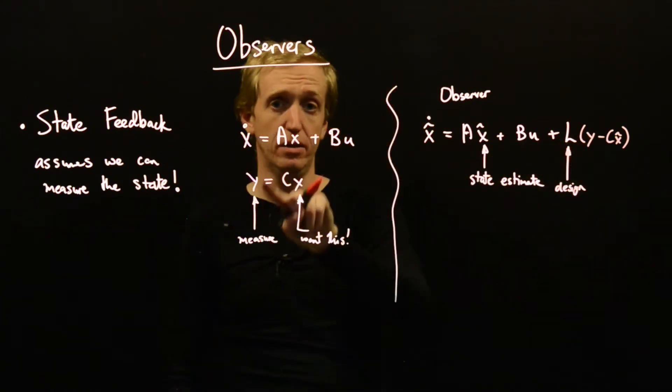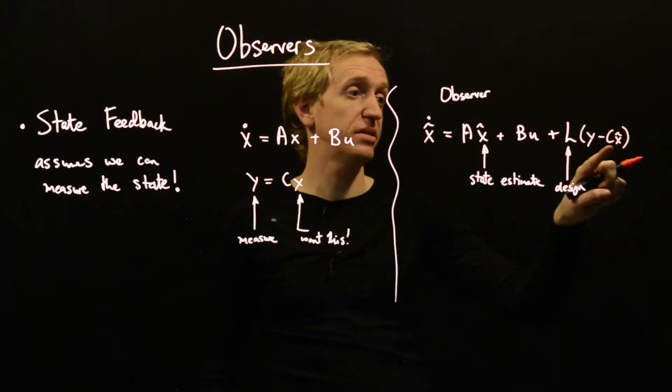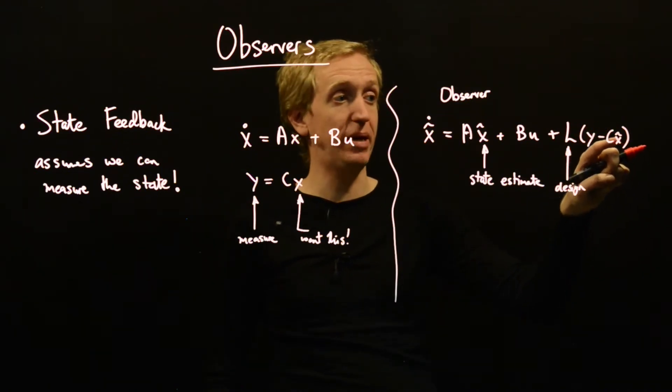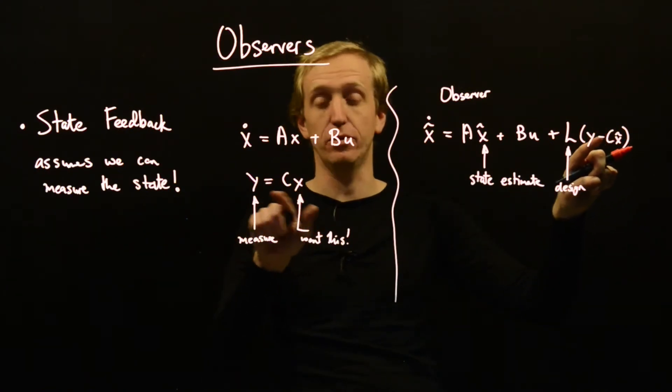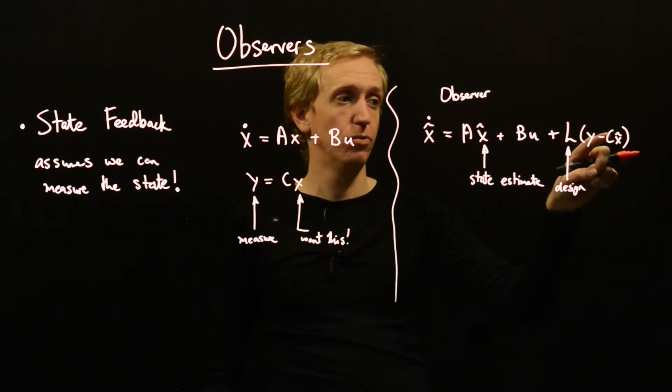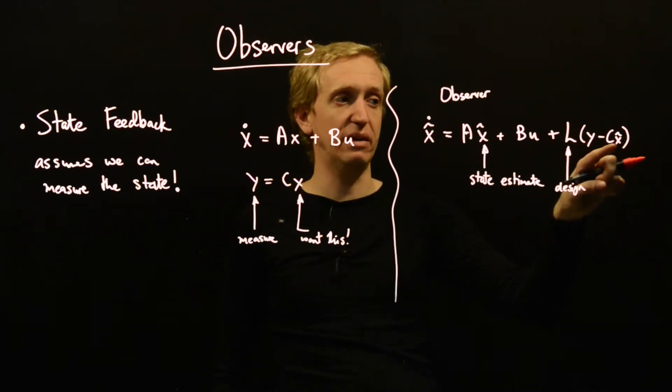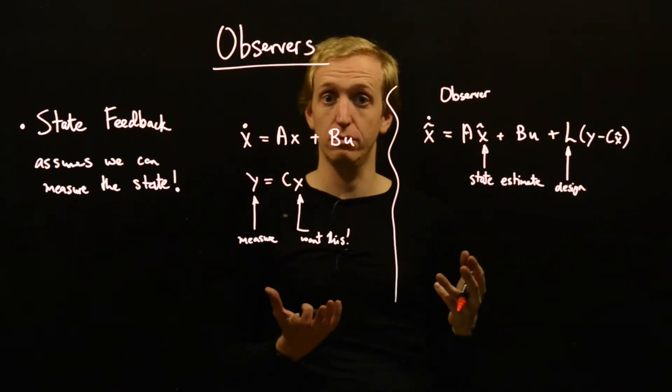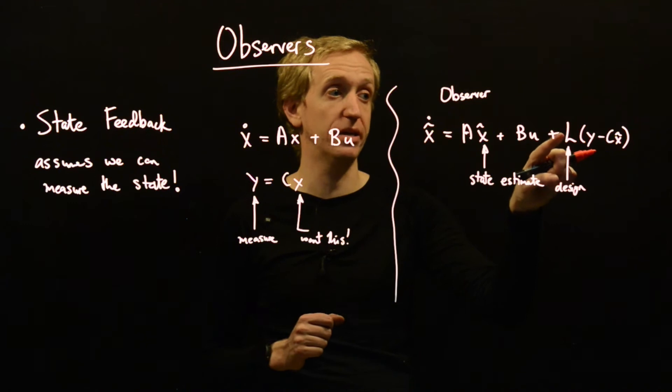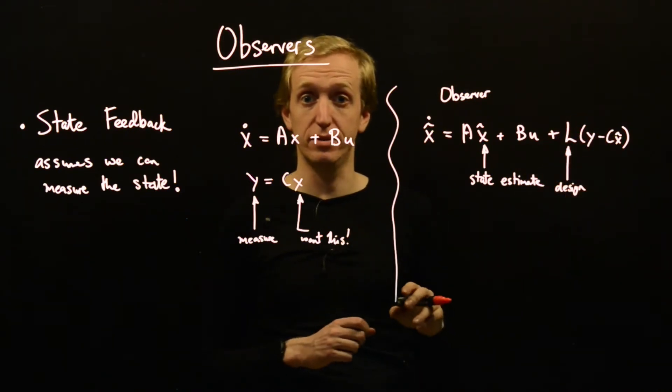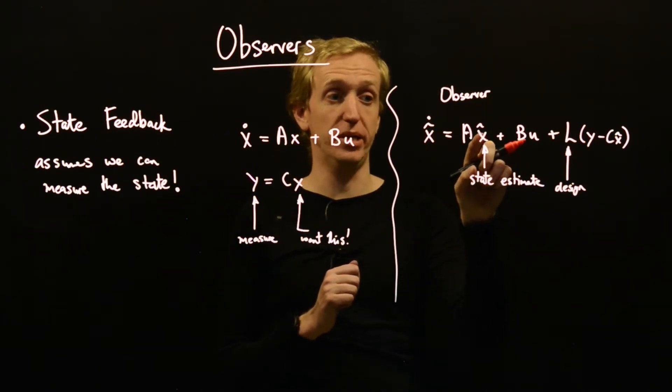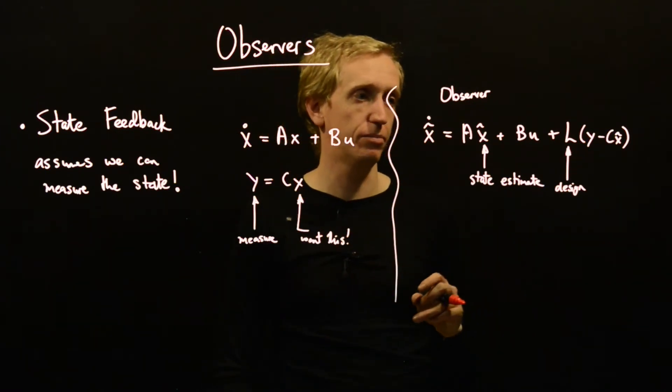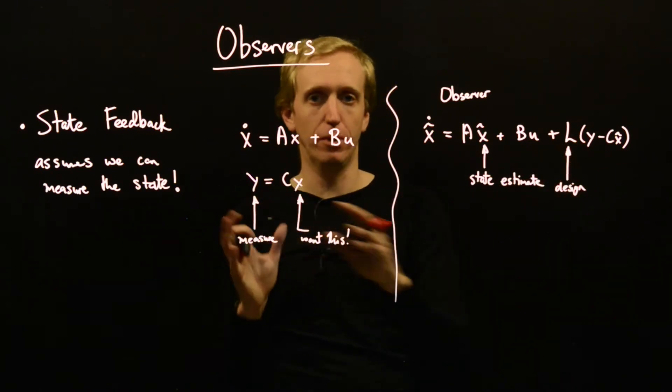So what are the various pieces here? y is our measurement, what we get from our real system. And C x hat is what we think the output should be. Based on our estimate of the state, this is what the output would be. So we compare what our real output is to what we think it should be based on our state estimate, and we include this in our observer. If we design this matrix L in a clever way, we'll be able to drive this error to zero. Ideally, we'll be able to drive the difference between our observer and our true model, or our observer and the real process, to match up.